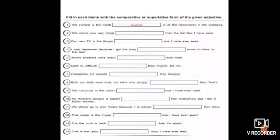Now, coming to the worksheet. Here is a worksheet where you have to use the comparative or superlative form to fill in the blanks. The first one is done for you: 'The trumpet is the blank of all the instruments in the orchestra.' The word in the bracket is 'loud,' so the answer is 'the loudest' — no other instrument is as loud as the trumpet. Similarly, a word is given in the bracket for each sentence; change it to the comparative or superlative form to complete the sentence. Please complete the sentences and keep them ready to submit. That's all for today. Thank you.